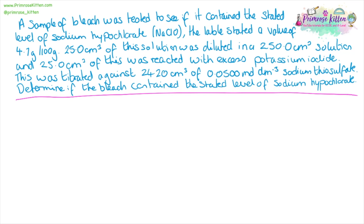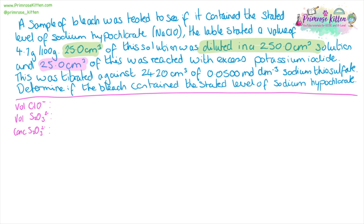A sample of bleach was tested to see if it contained the stated level of sodium hypochlorite. The label stated a value of 4.7 grams in 100 grams. 25 cm³ of this bleach was diluted in a 250 cm³ solution, and 25 cm³ of this was reacted with excess potassium iodide, and titrated against 24.2 cm³ of 0.05 mol dm⁻³ sodium thiosulfate.